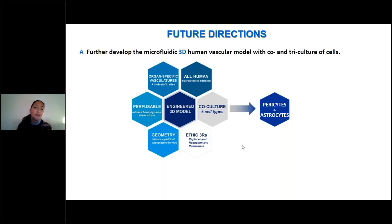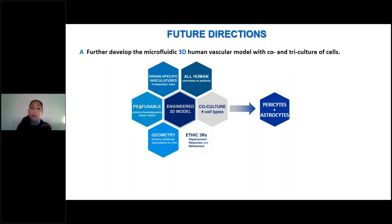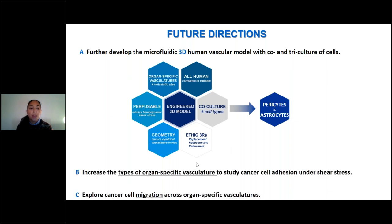Future directions include further developing the microfluidic 3D human vascular model with co-culture of cells. For the brain, we would like to add pericytes and astrocytes to our engineered 3D model, which is all-human, organ-specific, perfusable, and has a geometry that mimics cylindrical vasculature in vivo — fitting within the ethics of the three Rs: replacement, reduction, and refinement. We also plan to increase the types of organ-specific vasculature to study cancer cell adhesion under shear stress, and explore cancer cell migration across organ-specific vasculature, beyond just cell adhesion.